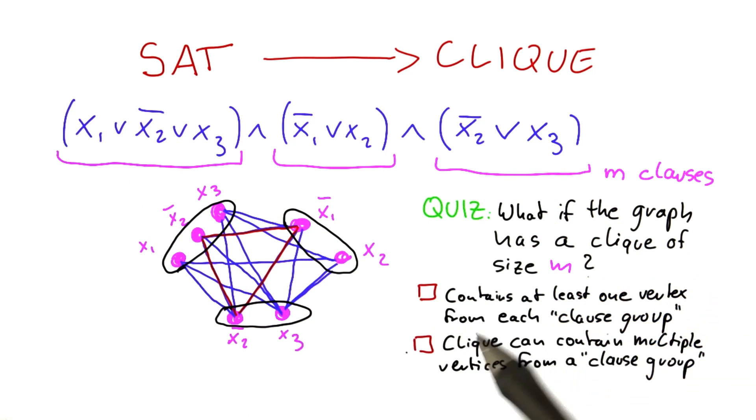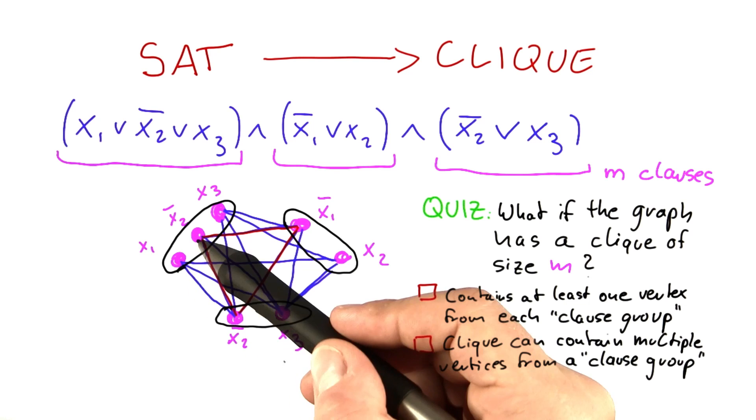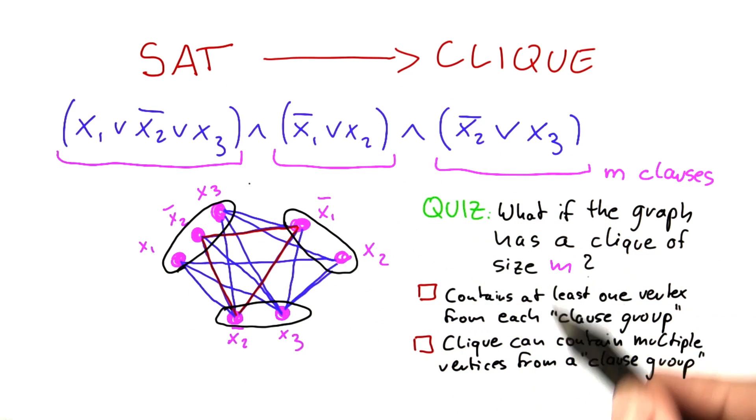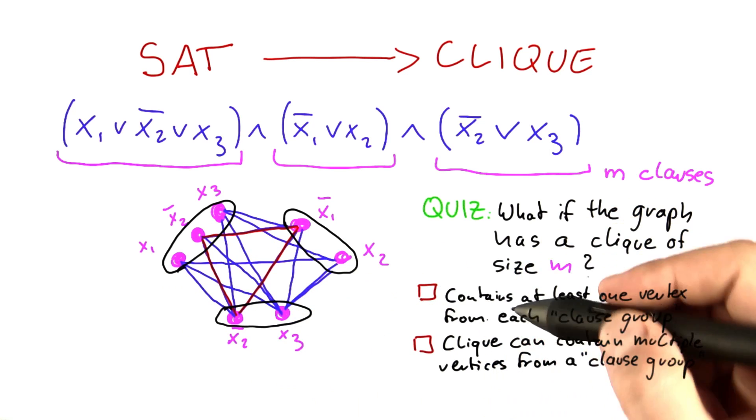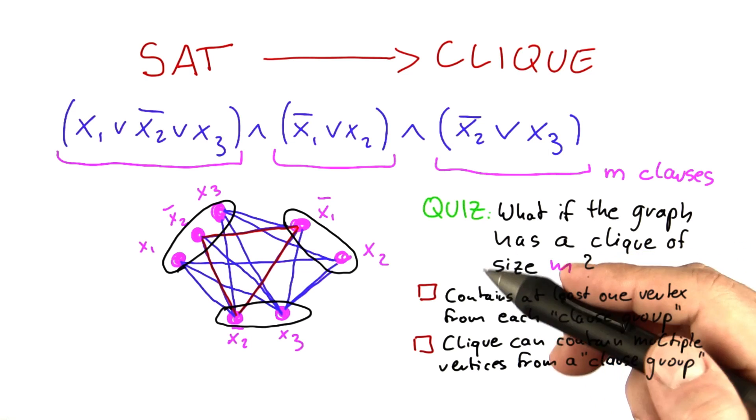And what I would also like you to think about is, if a clique can contain multiple vertices from one of these clause groups here. So if we could have a clique, say for example, that could contain these two vertices here, or these two here, or in the more general case, if we can have a clique that contains more than one vertex from each of these groups here. So please check those that are correct and leave the other ones blank.